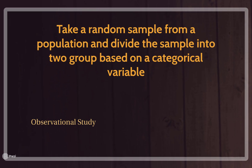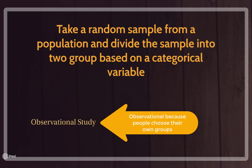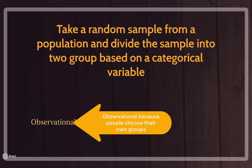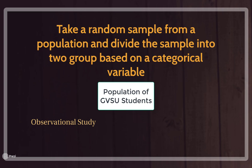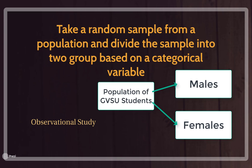Another way to collect two independent group data is to take a random sample from a whole population and then divide the sample into two separate groups based on some categorical variable. This scenario would only be an observational study because we are asking people about that categorical variable and separating them into those groups. For example, I could take a random sample from the population of GVSU students, and if I was still interested in time to run a mile, I would separate males and females — observing time to run a mile for males versus females. It's from one population initially, but then we're separating them into the groups, males versus females.